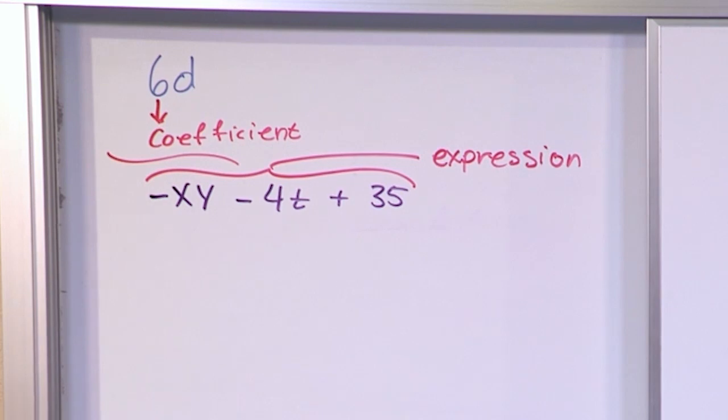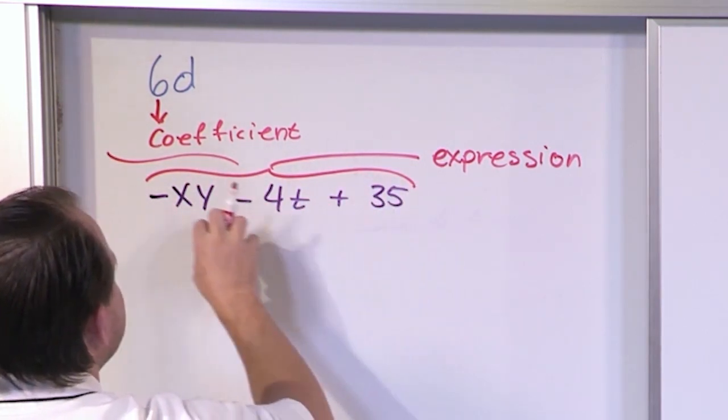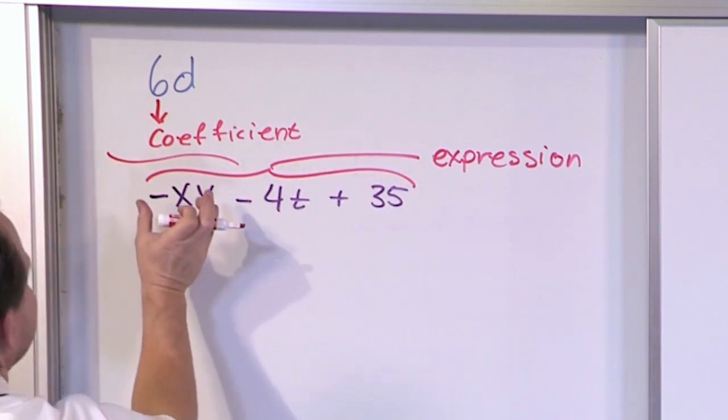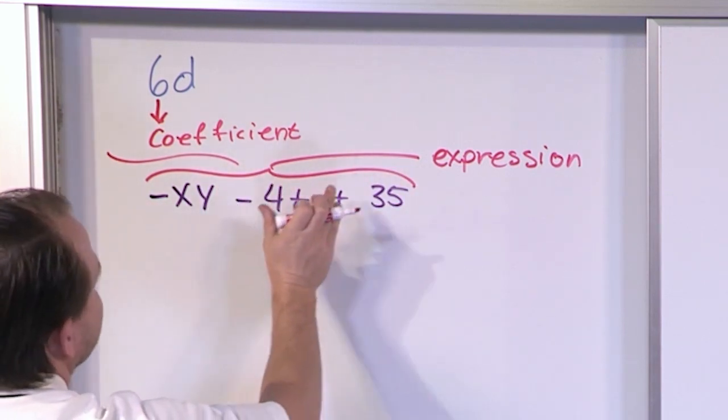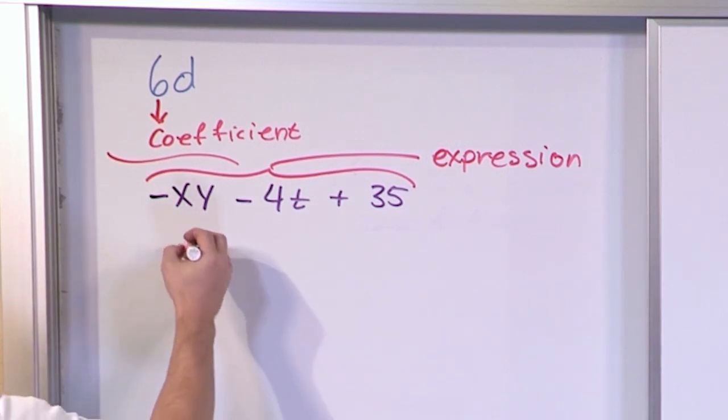Now, how many terms do you think are contained in this expression? A term is like a little nugget of goodness. They're all either added or subtracted. This is a term, this is a term, this is a term of the expression. So how many terms do we have? We actually have three terms.